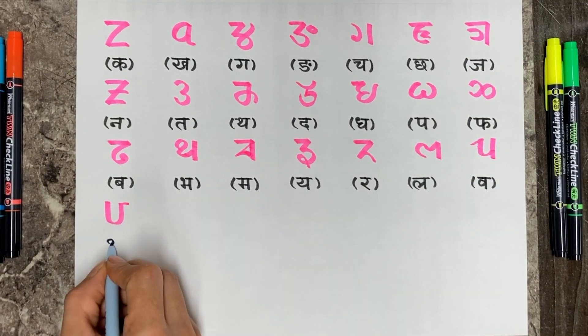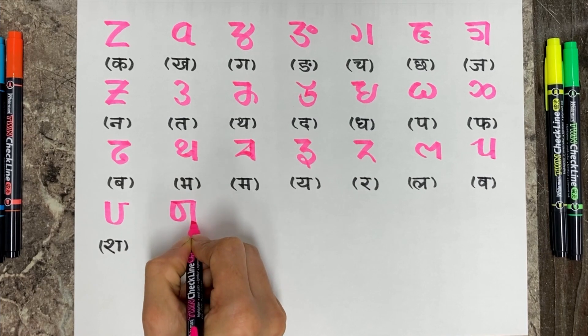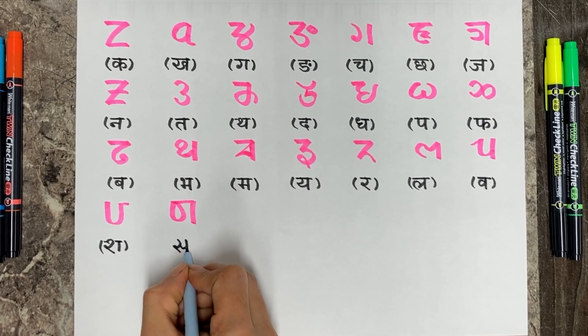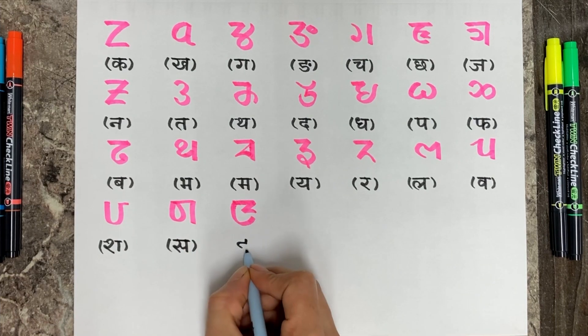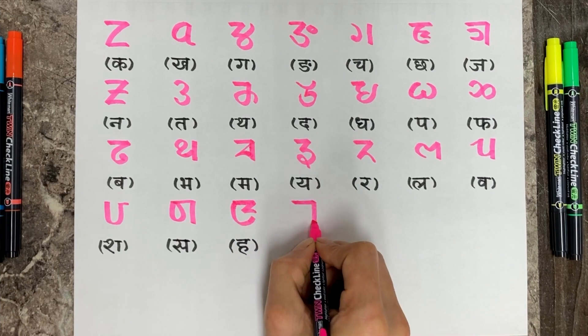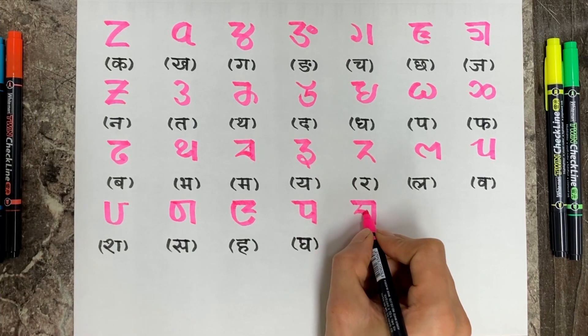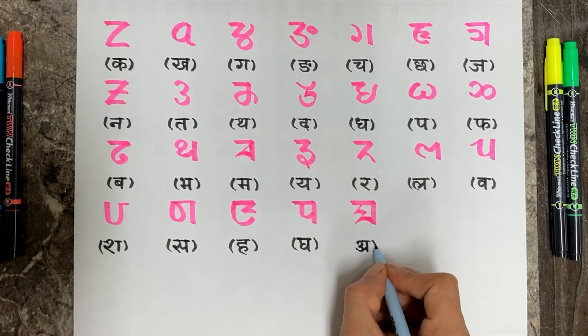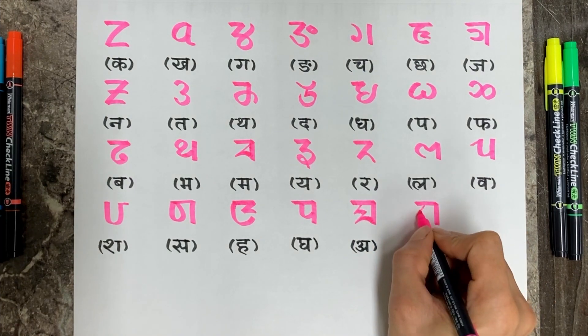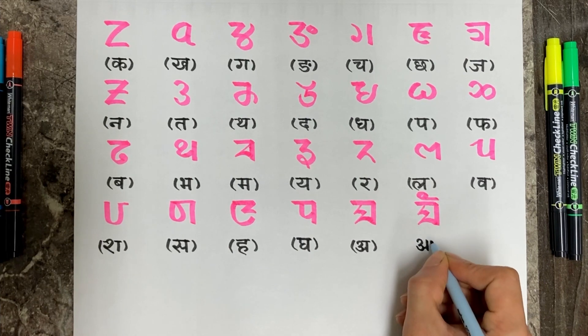વીક્ર લીબુ લીપી માં અન્ય કેનાતી ભાસાલે પણી લીપી બત ગર્ણે ગર્યએ કો છા તેઈ ભહેર યોયોટે લીપી લઈ પછેલો